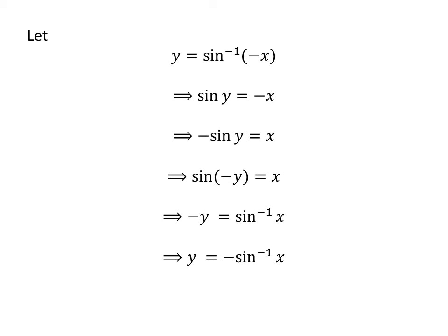Taking the minus sign to the right side of the equation, we get y is equal to minus arc sine of x. We had assumed y is equal to arc sine of minus x. So, arc sine of minus x is equal to minus arc sine of x. So, the identity is proved.